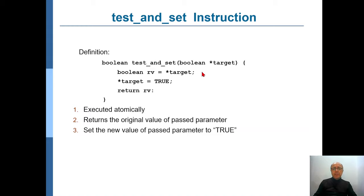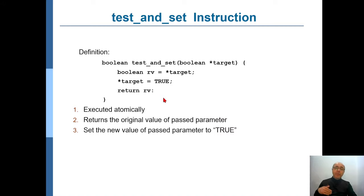One such implementation could be the test-and-set function. We assume we have a mechanism to execute this function in an atomic manner, meaning when you call this function there will be no context switches. It is a very simple function: it takes a boolean variable passed by reference, stores its value in a temporary variable, and sets it to true — that's where the 'set' in the name comes from. It returns the previous value. So if previously it was false, it returns false but converts it to true; if it was already true, it stays true and returns true. All this is done atomically.